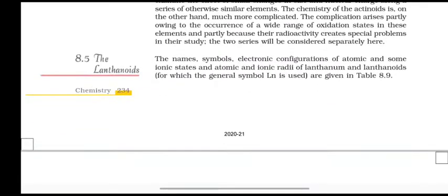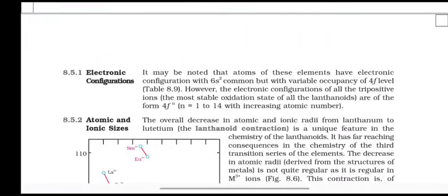The lanthanoids: the name, symbols, electronic configuration of atoms in some ionic states and atomic ionic radii of lanthanum and lanthanoids are given. Electronic configurations - it may be noted that the atoms of elements have electronic configuration with 6s2 common, with variable occupancy of 4f level. However, the electronic configuration of all tri-positive ions are of form 4fn.